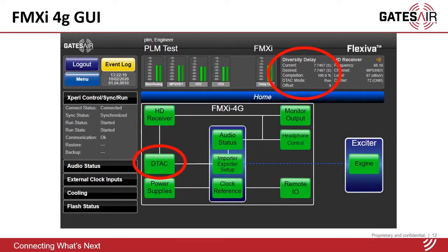One of the other functions in the GUI is the setup of the DTAC, the time alignment. In the upper right hand area next to the status of the receiver, you can see what the current delay setting is and also if there's a ramp currently going in or out of that delay, what percentage of the ramp is. In this case, there's a delay of 7.7 seconds. It's currently detected that delay and matched up the analog and digital to that, so it's 100% complete and the automatic correction is currently running.